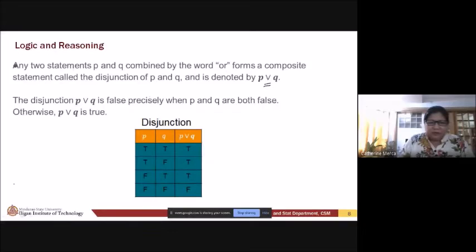So, the disjunction, P or Q is false precisely when P and Q are both false. Meaning to say, it will always be true. It will always be true for all cases. True, true. True, false. False, true. True. Basta or. It will always be true as long as may isang true. All the rest, pag pareha ng false, yun lang siya magiging false.